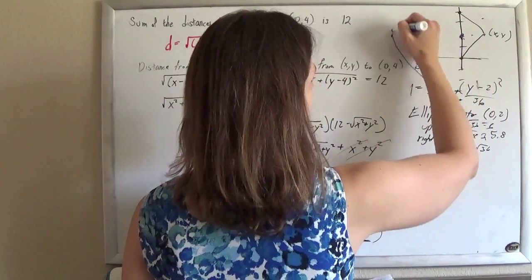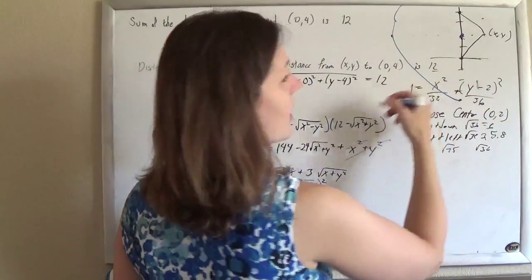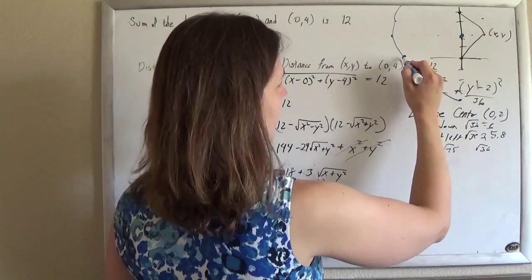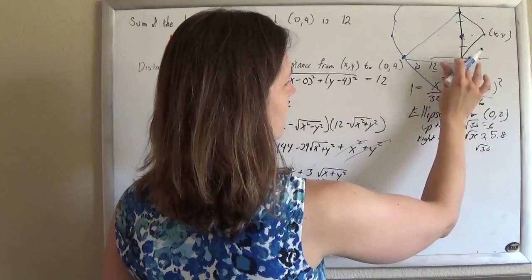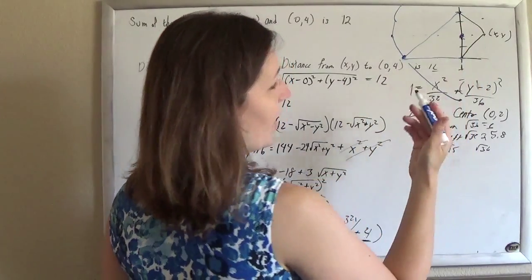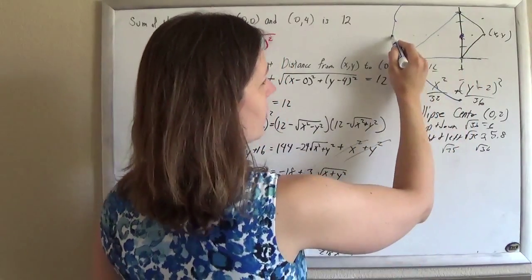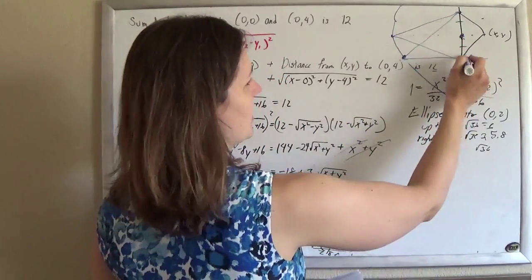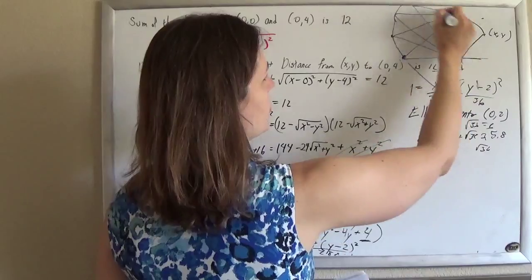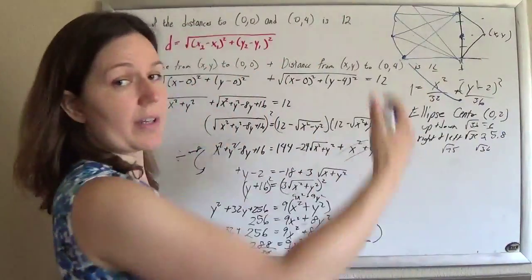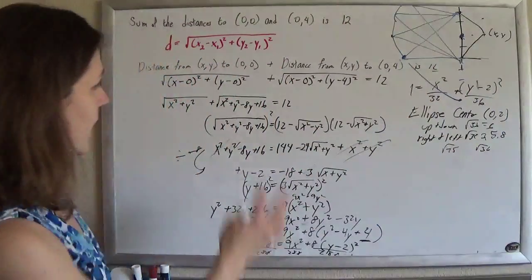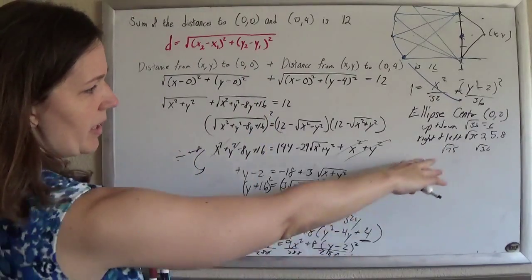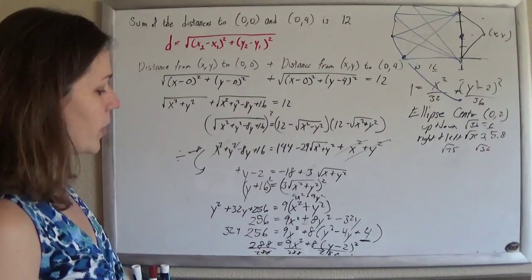So it's this kind of fat ellipse. The idea is that every single point on this ellipse — if you add that distance plus that distance, you get 12. It's this string that's 12 long that's generating the ellipse. So just translate, keep squaring to get it into that lovely ellipse standard form, and there you have it.